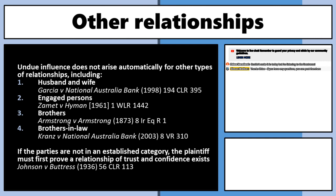The bars and defenses will be covered in a separate recording alongside unconscionable transactions. To summarize: if you're in one of the five or six exhaustive categories, tick the box — undue influence automatically arises and you win. If not, you can argue class 2b and prove on the balance of probabilities that this was a special relationship of trust and confidence — one where you were the weaker party who always deferred to the more dominant person. This happens with strong friendships and carers for elderly people.